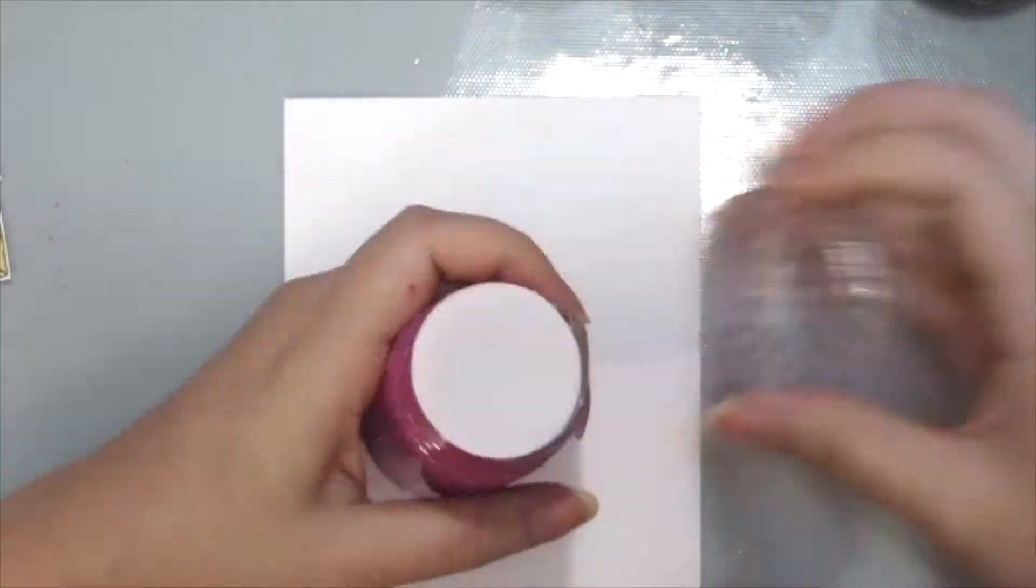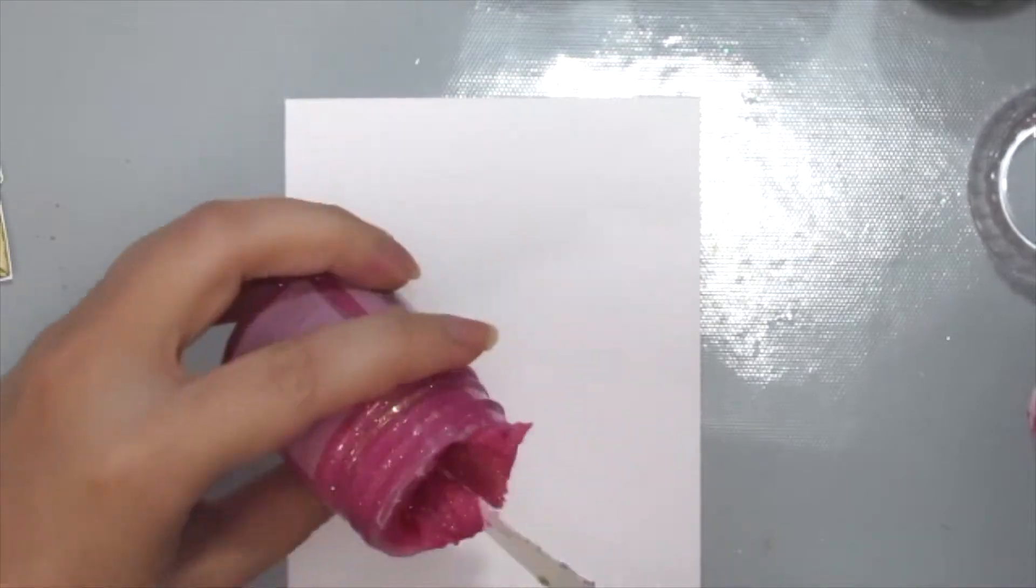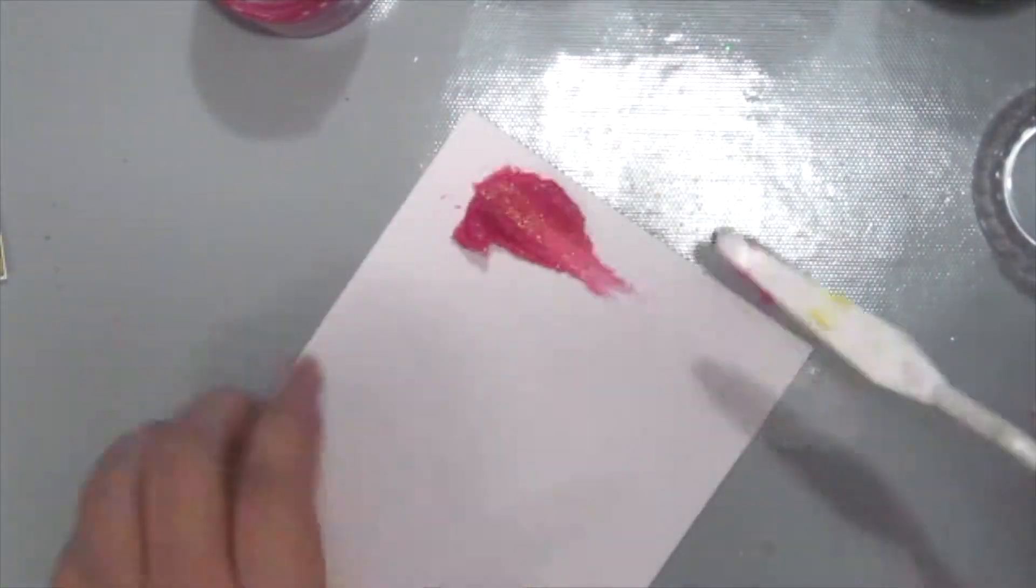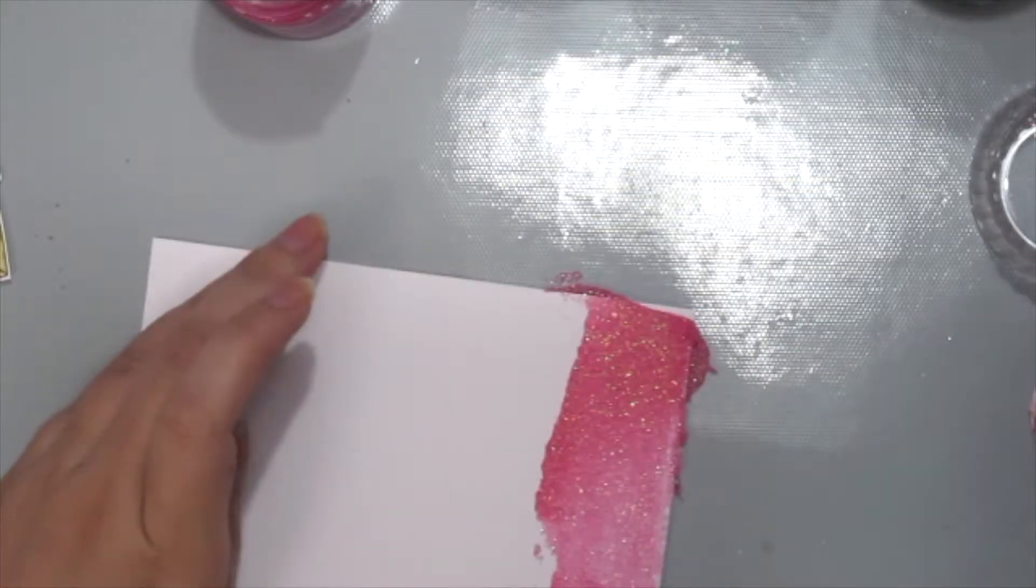So what I want to do is create four stripes of colors, so I'm grabbing the Glimmer Paste and a palette knife and just kind of eyeballing how thick my stripe is going to be.